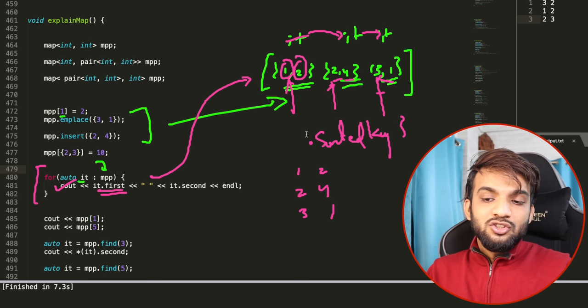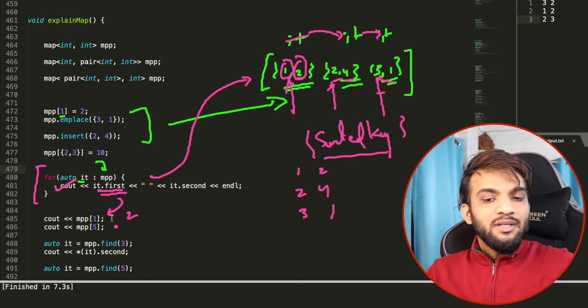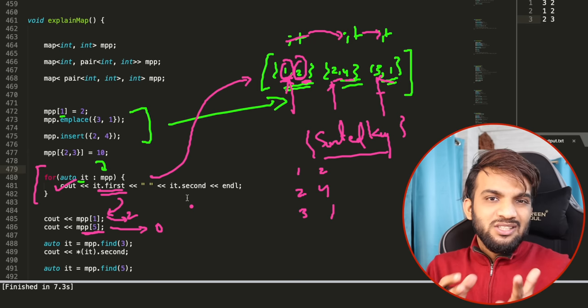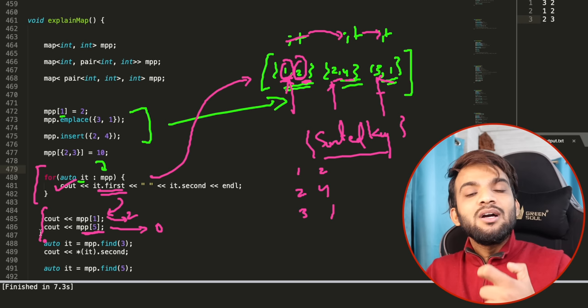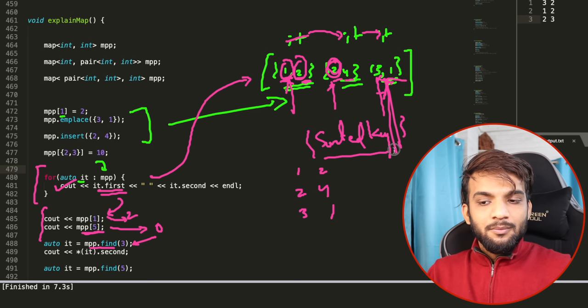To access a value: `mp[1]` returns 2. If you access a key that doesn't exist, like `mp[5]`, it returns 0 (default). To find an iterator: `mp.find(3)` returns an iterator pointing to the entry with key 3. Dereference with `*` to access the pair. Map stores unique keys in sorted order — no duplicate keys, though values can repeat.